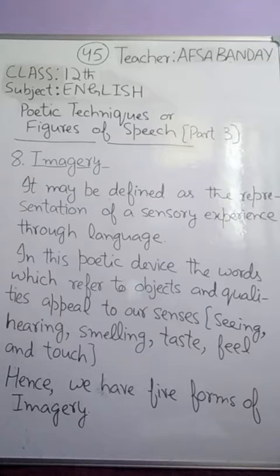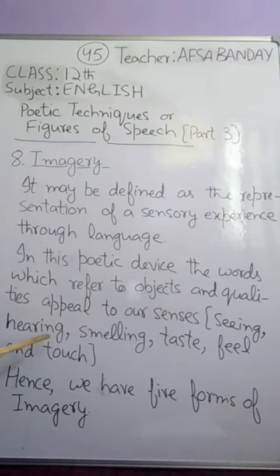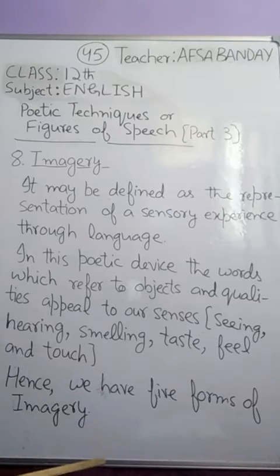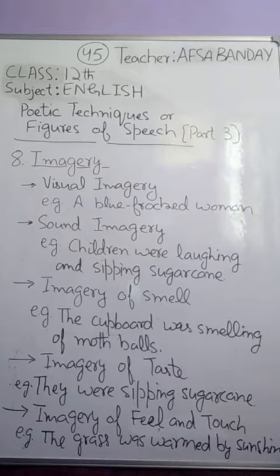When words appeal or language appeals to our five sensory organs — as if we are seeing something, as if we are hearing something, as if we are smelling something, as if we are tasting something, as if we are feeling or touching something — that poetic device is called Imagery. Hence we have five types of imagery, as per our five sensory organs.